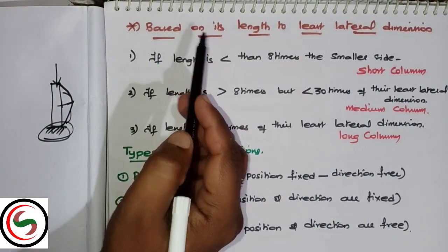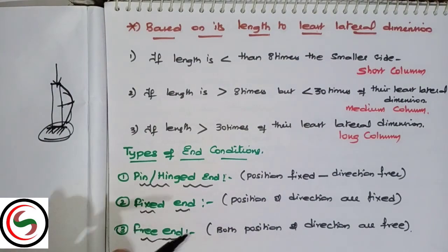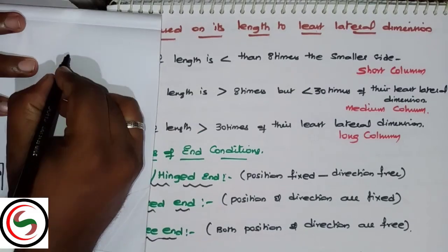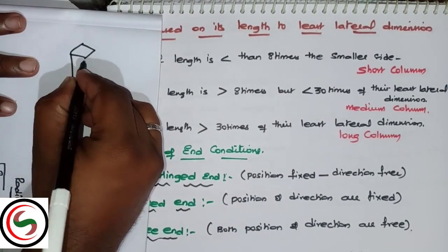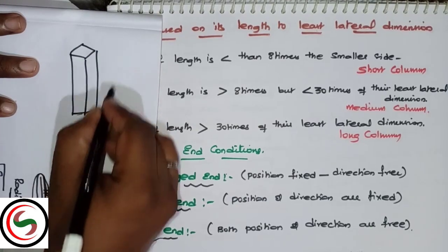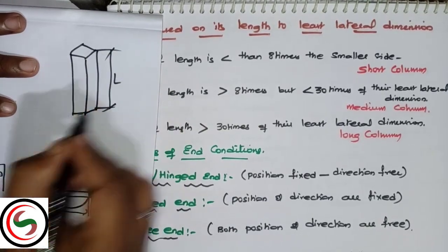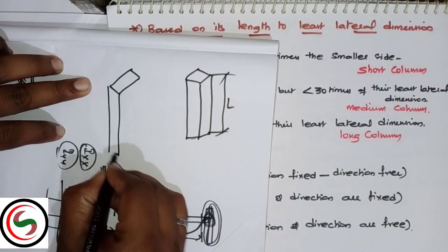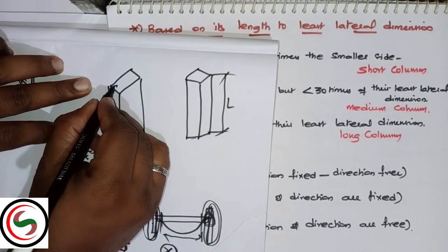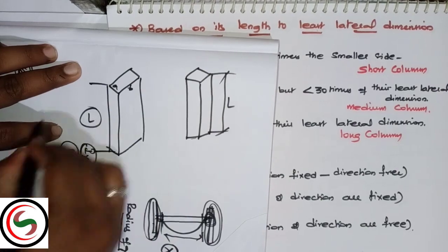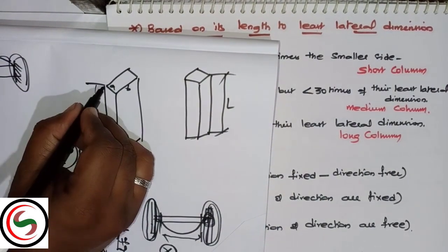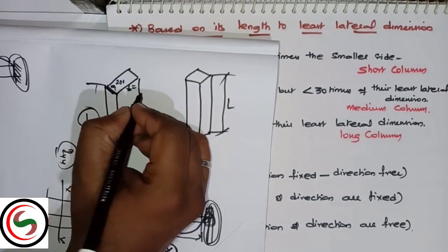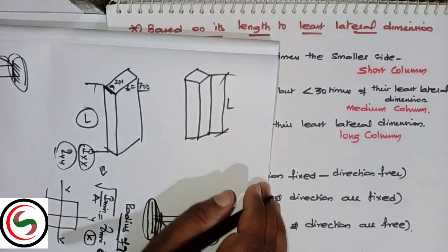Next, classifications based upon the length to least lateral dimension. Now, least lateral dimension means suppose a column, a rectangular column, has dimensions b and a, where a is smaller. This is the effective length L.